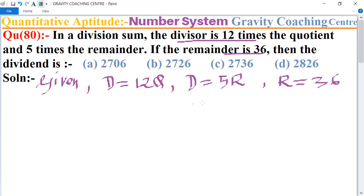So now we put here 5 into 36 equals 180. So now we put here 180 equals 12Q.